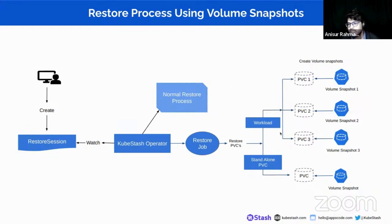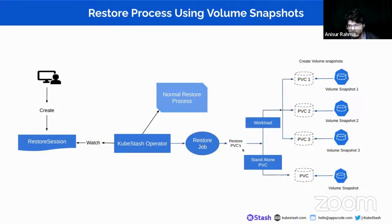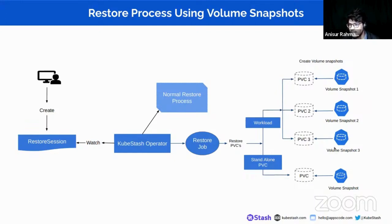Consider that previously you backed up a workload application with 3 PVCs — PVC1, PVC2, and PVC3 — as its storage system. For these 3 PVCs, the backup job created 3 volume snapshots. In our restore job, it gathers all the volume snapshot information from the KubeStash operator's custom snapshot object, especially from the snapshot status. For each corresponding volume snapshot, the restore job creates a single PVC.